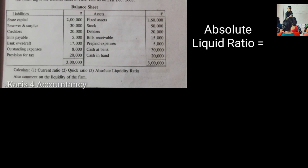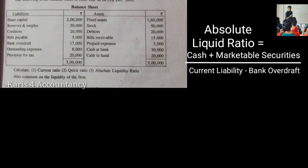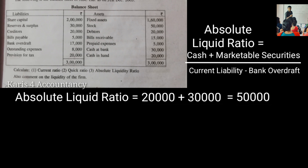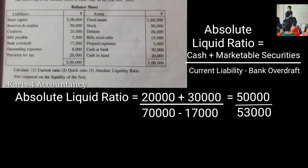For the Absolute Liquidity Ratio: cash and marketable securities — that is cash plus cash at bank — divided by current liabilities minus bank overdraft. After substituting the values, the absolute liquidity ratio is calculated.